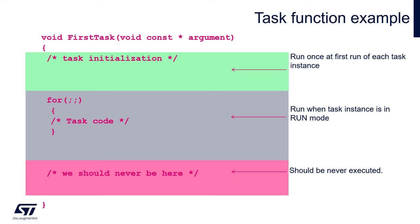Then the last part — the pink one — is the part where we should never land, because if we land in this part it means there is some problem with memory allocation, and we should have a closer look at the memory resources, especially the stack areas of the tasks.